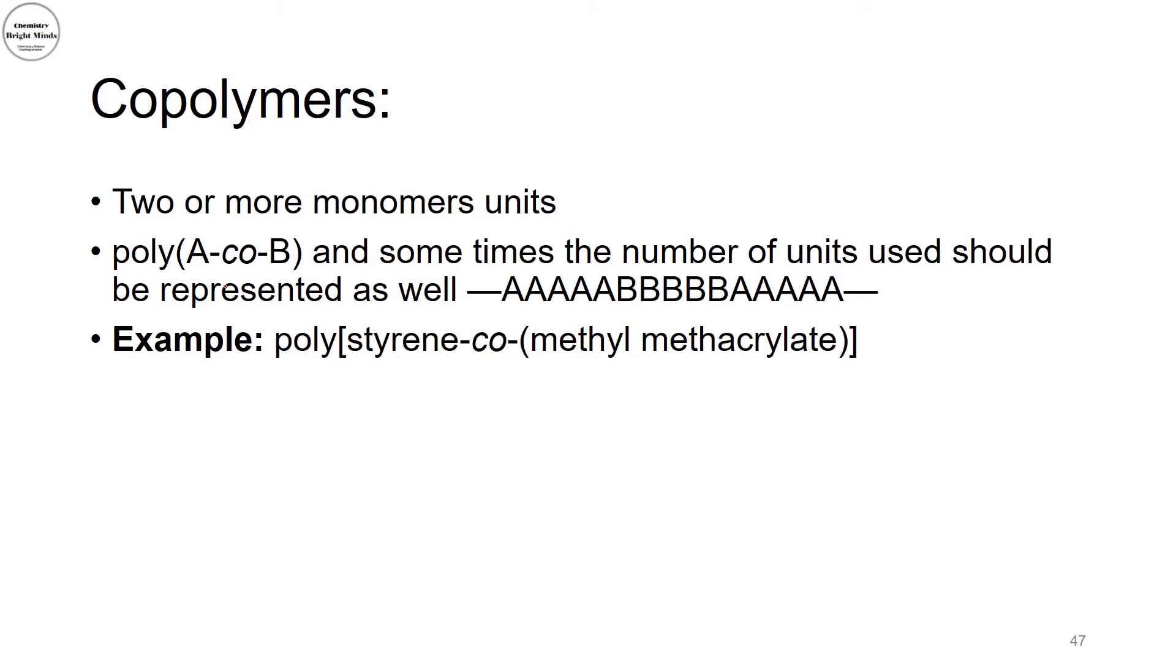Now, if I have copolymer instead of just one type of monomer, such as polystyrene or polyvinyl alcohol, polyvinyl chloride, now I have two or more monomers. This is when I start to name my polymer by adding the first monomer. Then I will put linkage between both of them, dash, co-, dash, then I would name my second polymer.